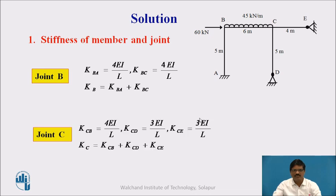For joint C, CB will have 4EI/L, and CE will have 3EI/L. We can see the opposite end is hinged. Therefore, CE will be 3EI/L and CD will be 3EI/L. Three members are meeting at joint C. The summation of all these stiffnesses gives the total stiffness of joint C.